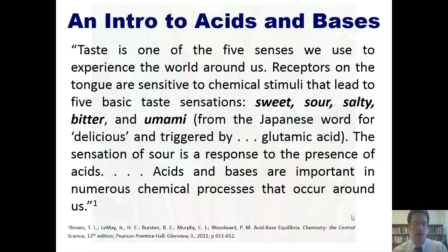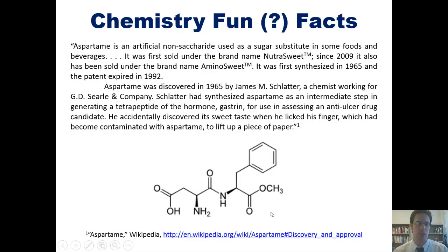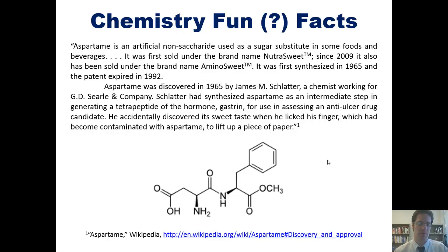Speaking of taste, I wanted to teach you about an artificial sweetener called aspartame, whose structure is shown right here. Aspartame is an artificial non-saccharide used as a sugar substitute in some foods and beverages. It was first sold under the brand name NutraSweet; since 2009, it has also been sold under the brand name AminoSweet. It was first synthesized in 1965, but the patent expired in 1992. Aspartame was discovered in 1965 by James M. Schlater, a chemist working for G.D. Searle and Company. Schlater had synthesized aspartame as an intermediate step in generating a peptide of the hormone gastrin for use in assessing an anti-ulcer drug candidate. He accidentally discovered its sweet taste when he licked his finger, which had become contaminated with aspartame. And thus, aspartame — or NutraSweet — was discovered.